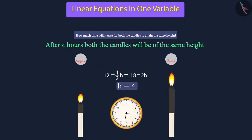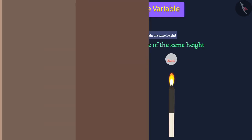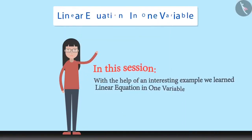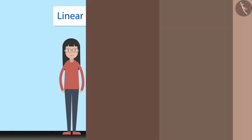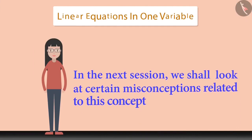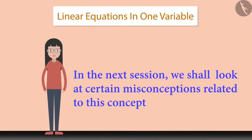Since the candles were lit at 6 AM, they would be of equal length at 10 AM. With the help of this interesting example, we learned linear equations in one variable where the variable is present on both sides of the equation. In the next session, we shall look at some misconceptions related to this concept.